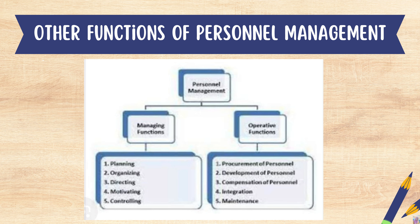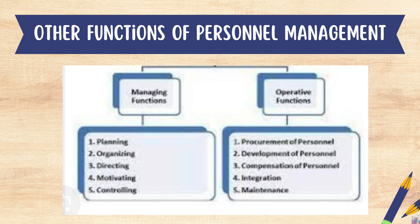Now let's go to the other functions of personnel management based on this picture. Personnel management has two functions: managing functions and operation functions. Under managing functions: number one is planning, number two is organizing, number three is directing, number four is motivating, and number five is controlling. Under operation functions: number one is procurement of personnel, number two is development of personnel, number three is compensation of personnel, number four is integration, and number five is maintenance.